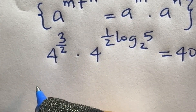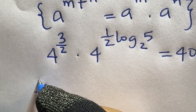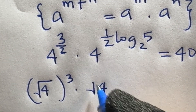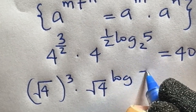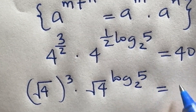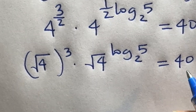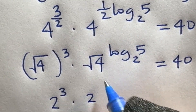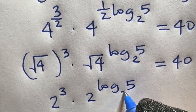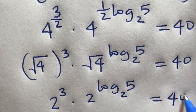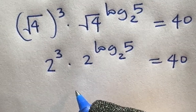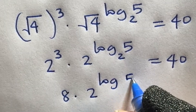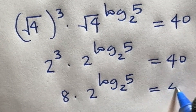This is the same as square root of 4 raised to power 3, times square root of 4 raised to power log 5 base 2, is equal to 40. This gives us 8 times 2 raised to power log 5 base 2 is equal to 40.